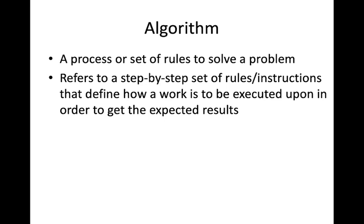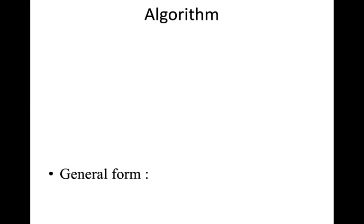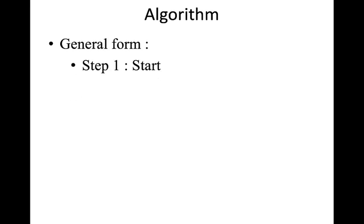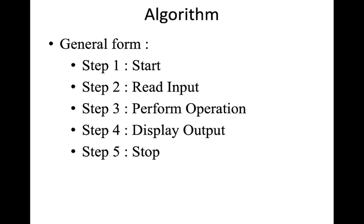We have some input and a set of rules — this is known as an algorithm — and from this set of rules we get an output. The general form of an algorithm is: Step 1: Start. Step 2: Read the inputs. Step 3: Perform the required operations step by step. Step 4: Display the output. Step 5: Stop. This is the general format of an algorithm.